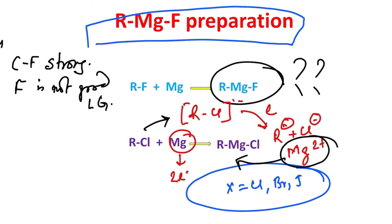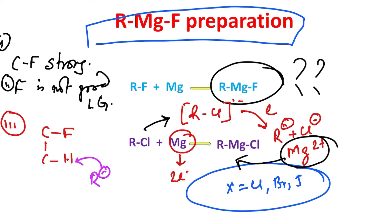Third point: beta-hydride elimination. For example, consider a C–F carbon where the next carbon has a C–H. The electron can also act as a base, and in the reaction, if some amount of Grignard is produced, that R⁻ can abstract the hydrogen, which leaves as HF. Consequently, instead of RMgF, we end up with an alkene derivative.